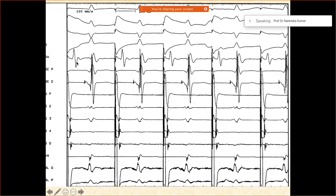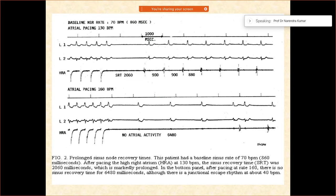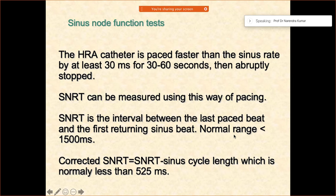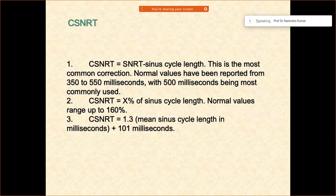Pacing is going on initially, and then after 30 to 60 seconds you stop. For example, here the sinus recovery time is 2060 milliseconds, and the normal sinus cycle length is 900 milliseconds. So you subtract 900 from 2060, giving approximately 1160 milliseconds — which is fine. If it would be more than 1500 milliseconds, it would be abnormal. For the corrected SNRT, it should be less than 500 milliseconds; if it is more than that, it will be abnormal.